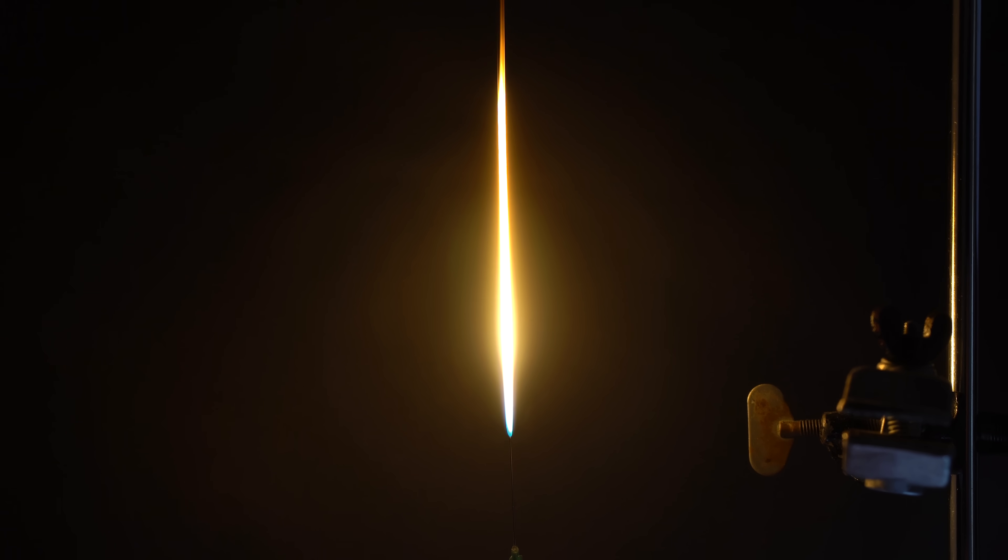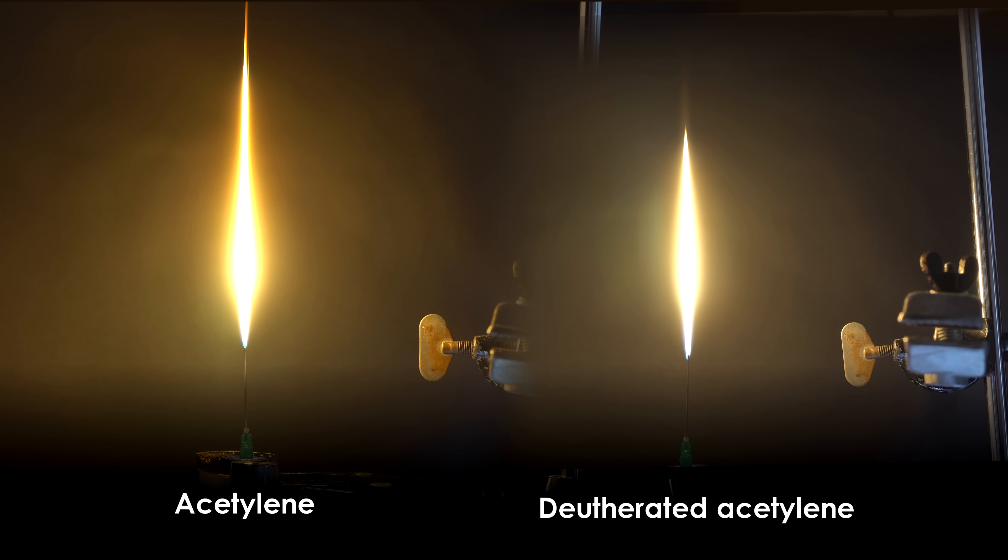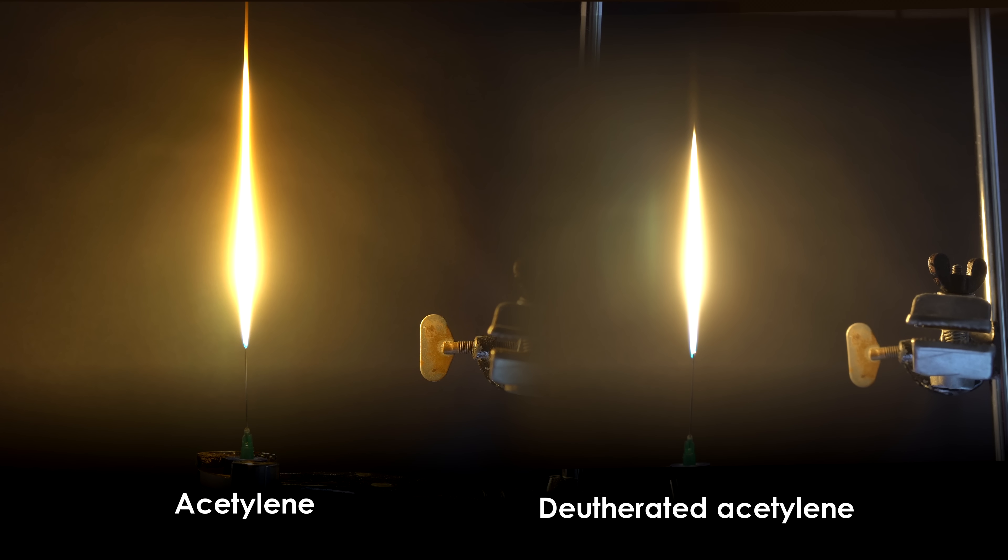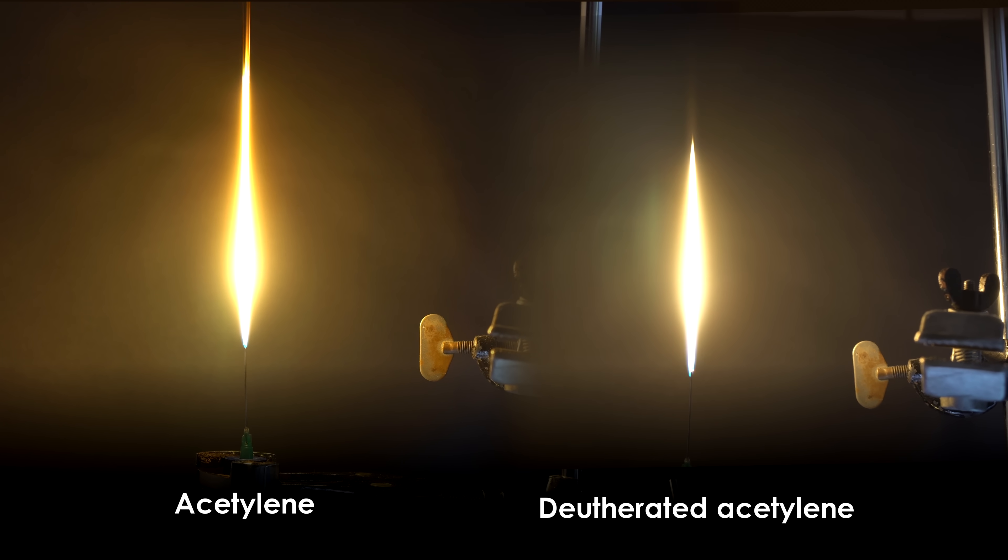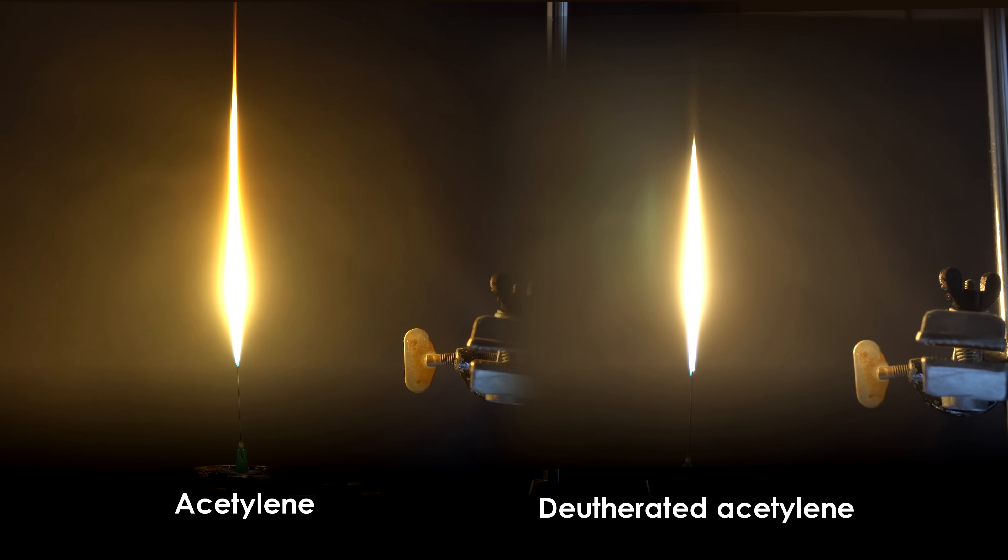I noticed a similar difference when I set acetylene and deuterated acetylene on fire and compared two flames. Both experiments were run in the same conditions. I used the same syringe needle in both experiments as a nozzle. If to compare both footages, we can see that the regular acetylene flame is more elongated and it is longer than the deuterated acetylene flame.